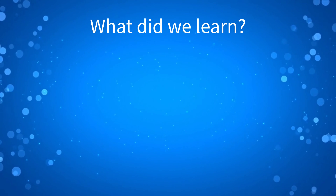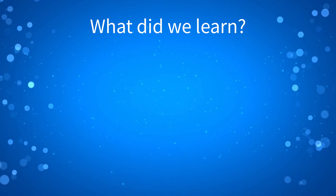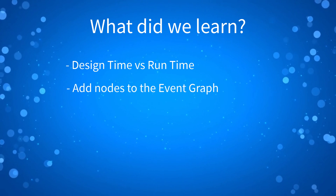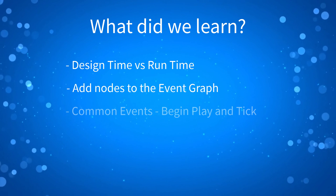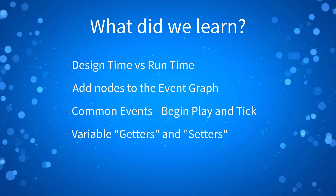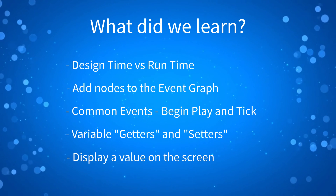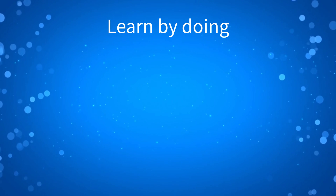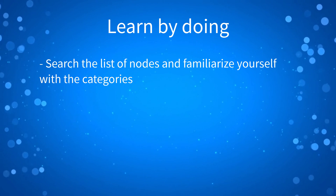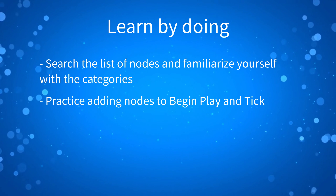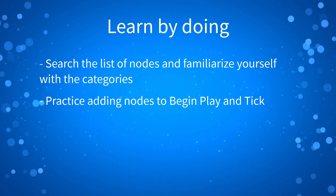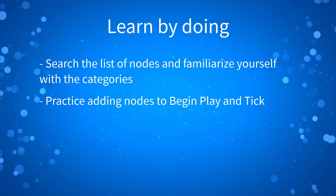Let's do a quick recap. In this lesson, we learned about design time versus runtime, how to add nodes to our graph, the common events Begin Play and Tick, variable getters and setters, and how to display a value on the screen. If you want to practice, search the list of nodes and familiarize yourself with the categories. Also practice adding nodes to Begin Play and Tick. That's it for this lesson — thank you so much for watching, and I'll see you in the next one.